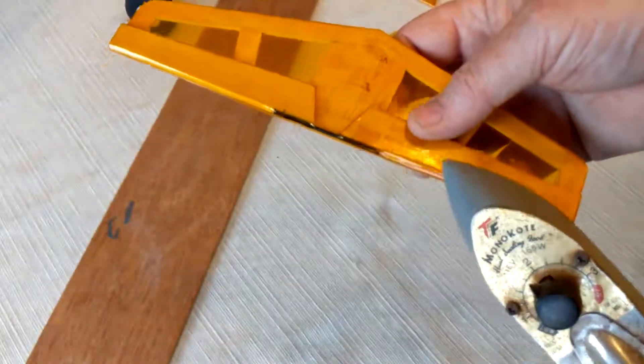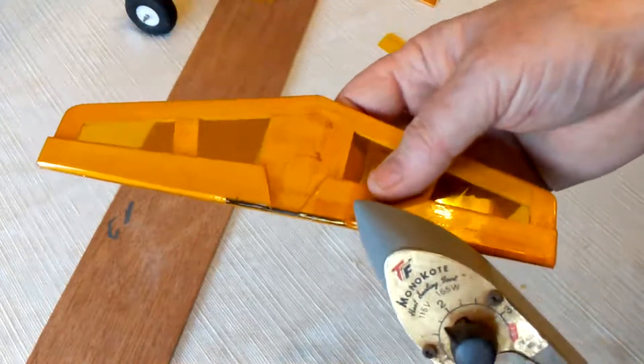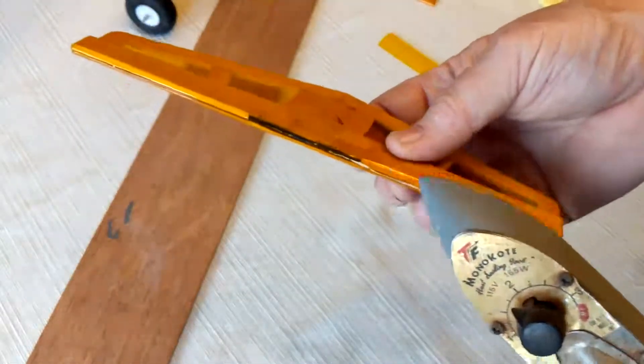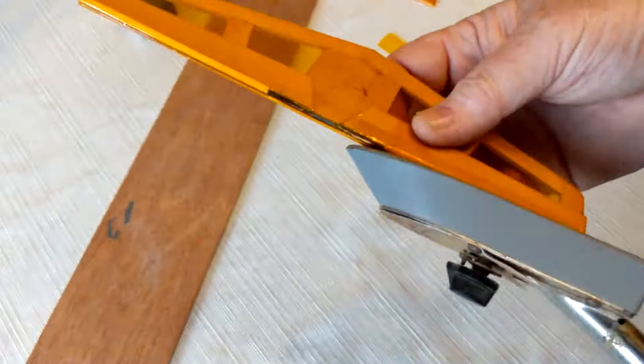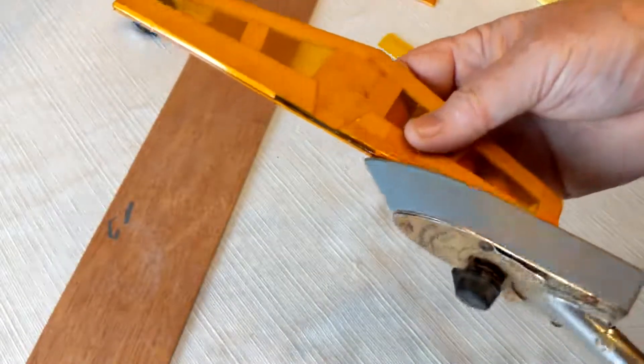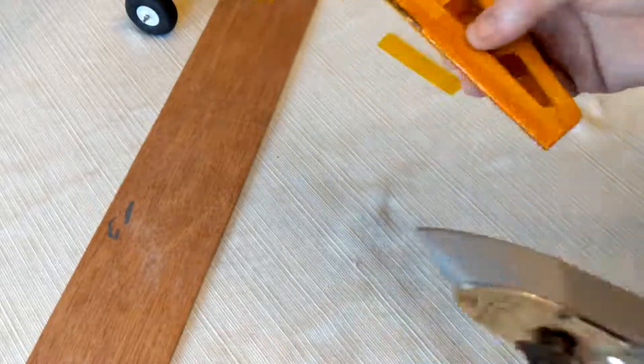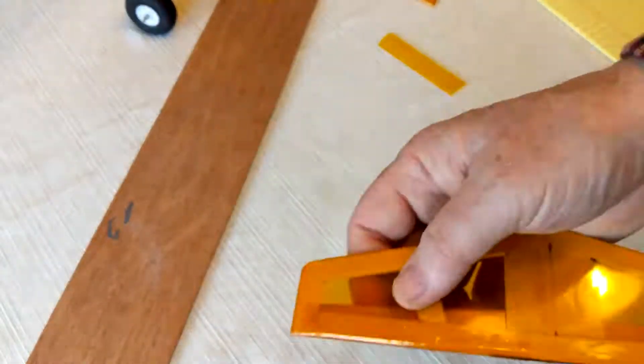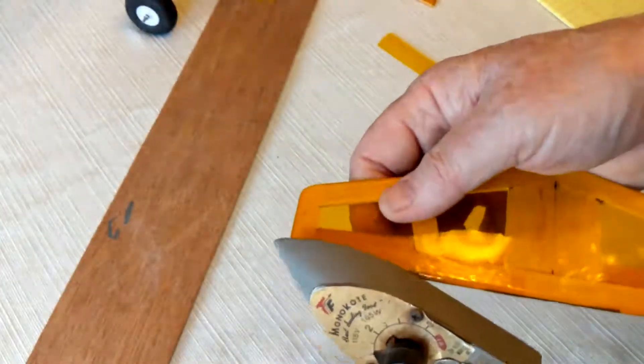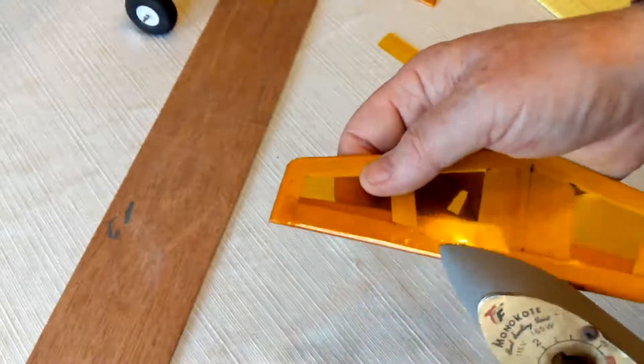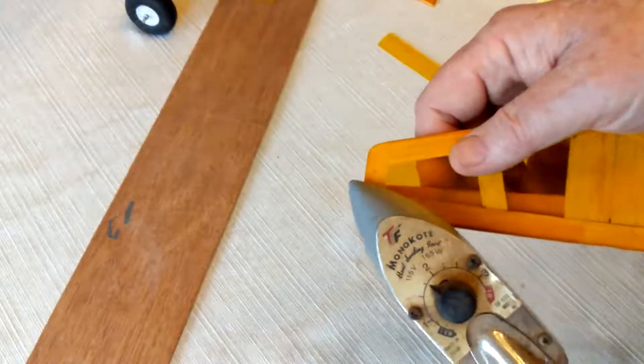Now that we've done that, we can go to the bevels and iron them down. Roll over and at this point we have glued the two parts of the hinge to each other. Turn it over to the other side and iron down the rest of it.